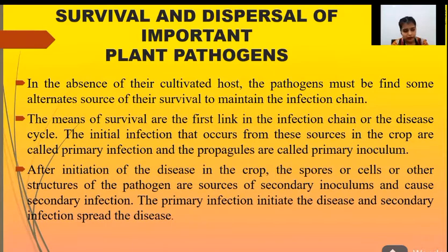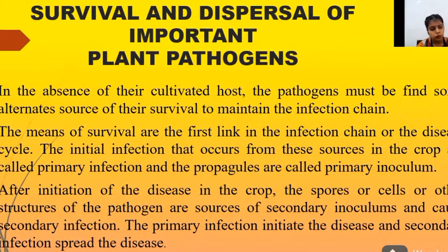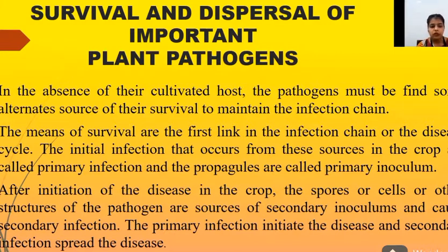The initial infection that occurs from these sources in the crop is called primary infection, and the propagules are called primary inoculum. After the initiation of disease in the crop plant, the spores or cells of the pathogens — whether bacteria or fungi — act as secondary inoculum and cause secondary infection. Primary infection initiates the disease, and secondary infection spreads the disease in large amounts from one place to another.